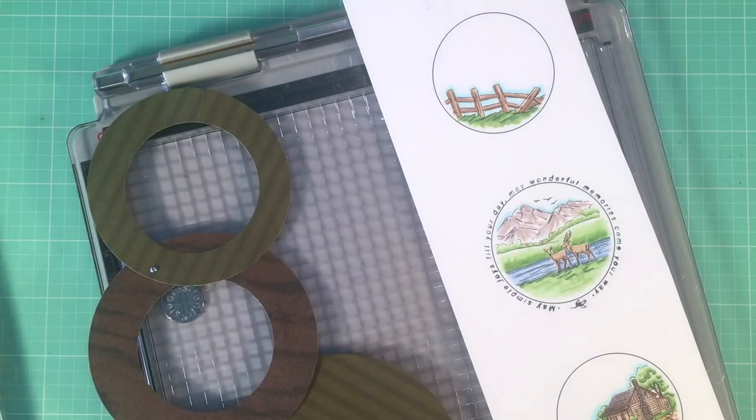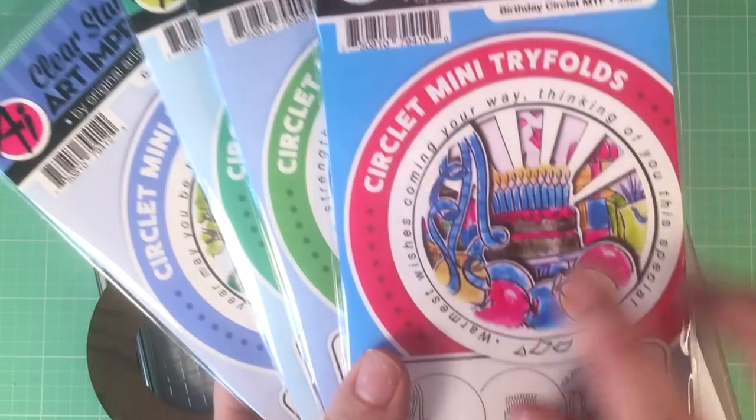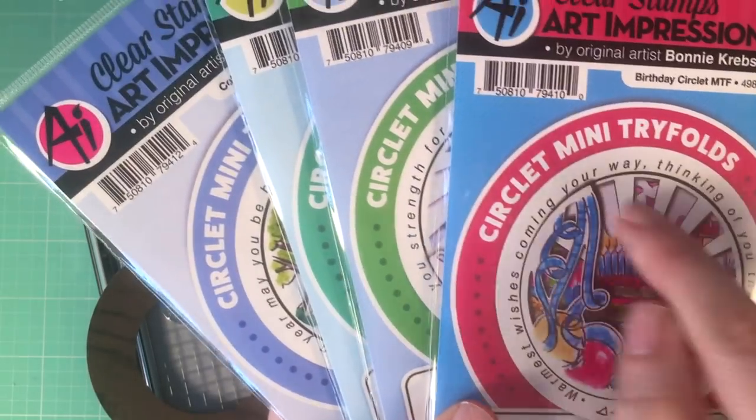Hi guys, it's Kate Swanson and I'm here to show you some new circlet mini tri-folds. These images are made in a circle.